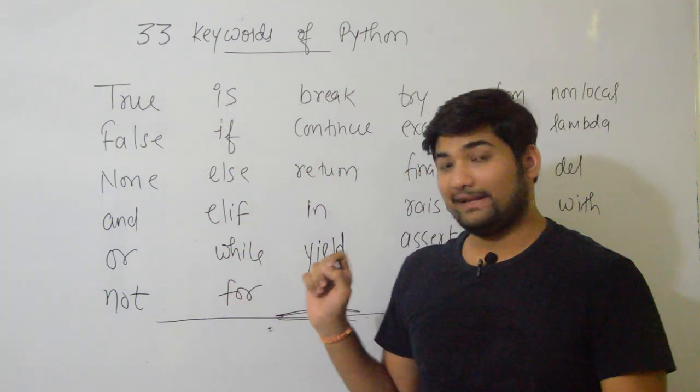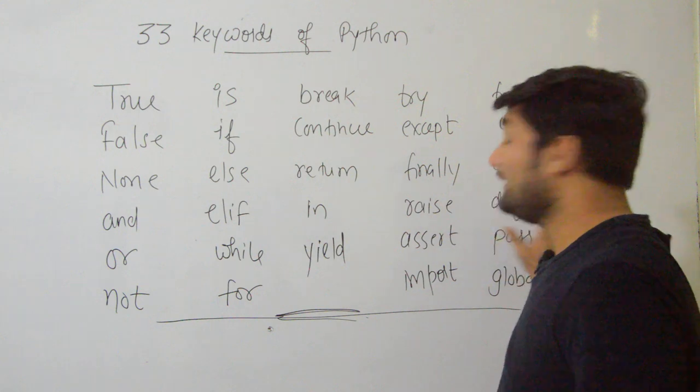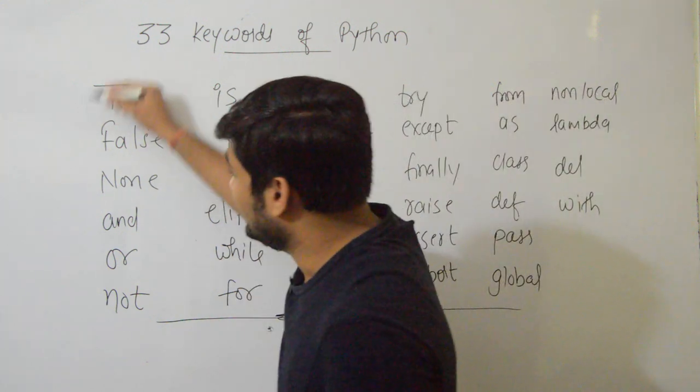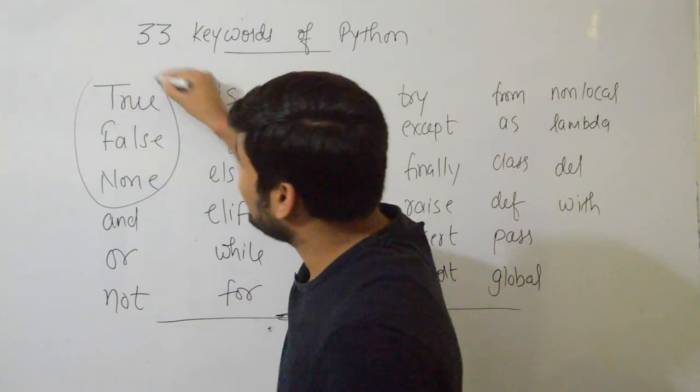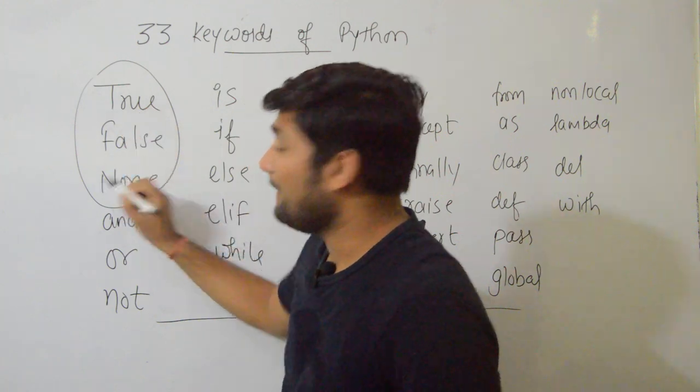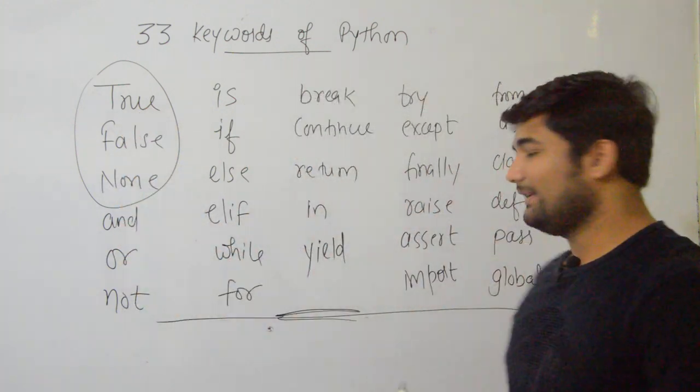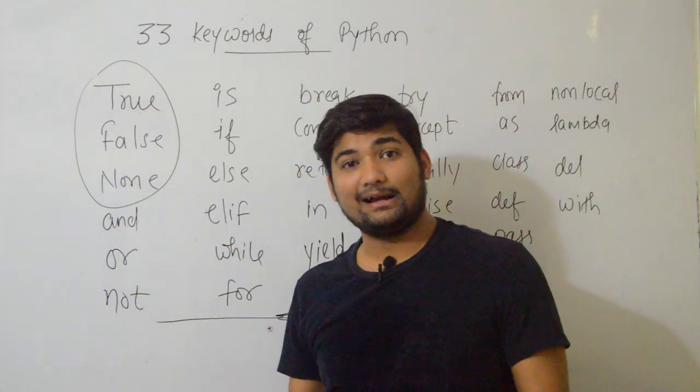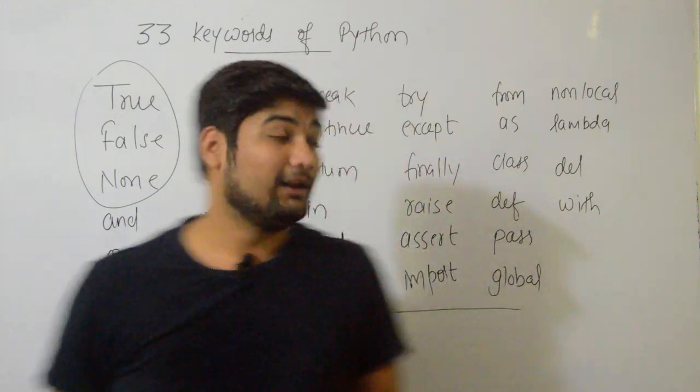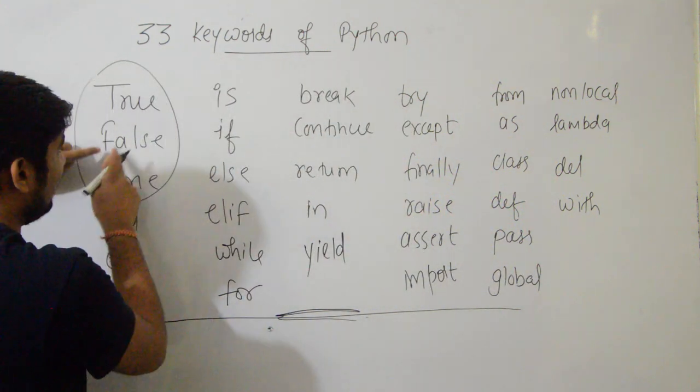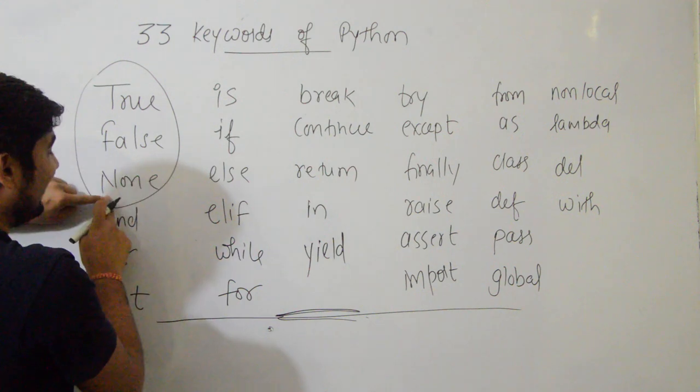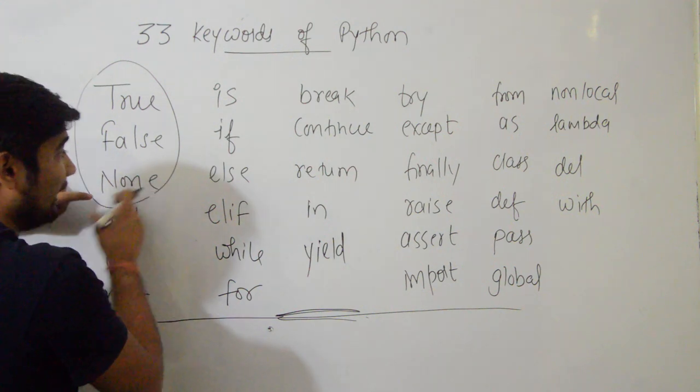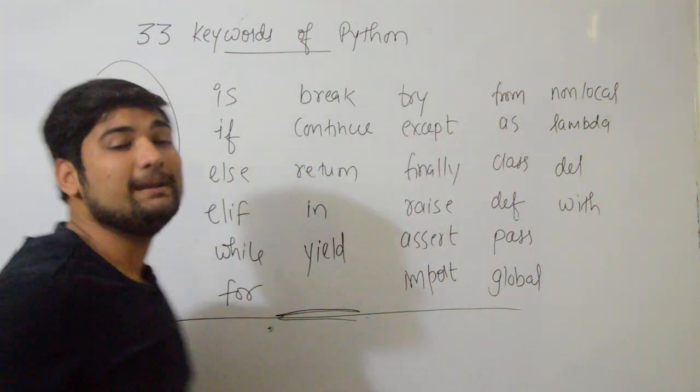One thing you can see here: all keywords are lowercase except these three. These three keywords start with a capital letter - the first word is capital. The rest are lowercase. This is case sensitive in Python. True is T, the rest are small. False is F, the rest are small. None is N, the rest are small. The others are fully lowercase, no capital letters.